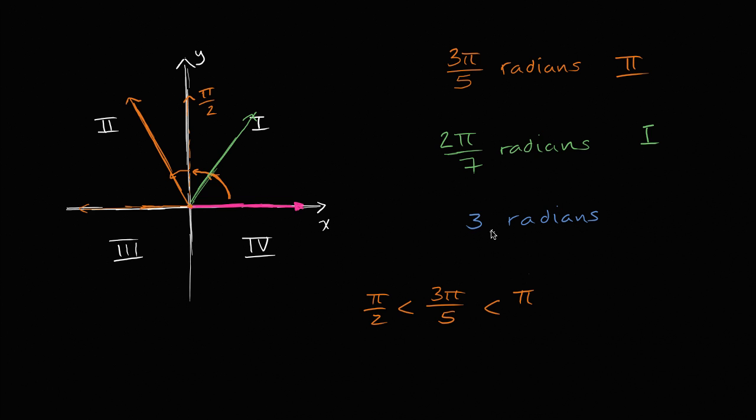Now what about three radians? So one way to think about it is three is a little bit less than pi. Right? Three is less than pi, but it's greater than pi over two. How do we know that? Well pi is approximately 3.14159, and it just keeps going on and on and on forever. So three is definitely closer to that than it is to half of that.